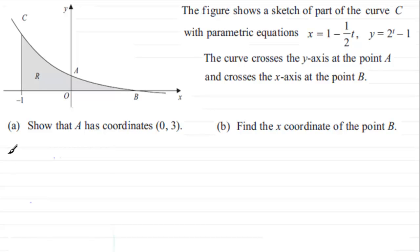Now for part A we know that at A the x-coordinate is equal to 0 and if we substitute this in here we can work out what t is and then go on to get the corresponding y-coordinate.